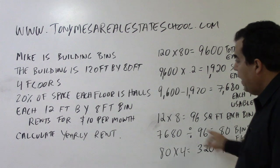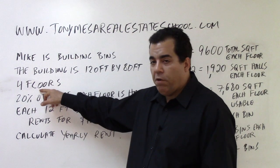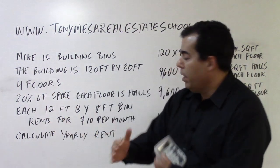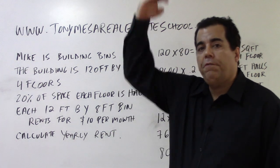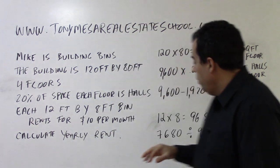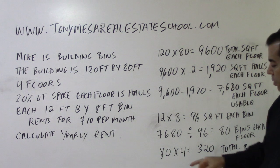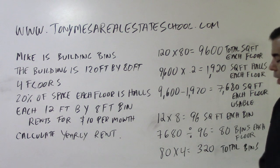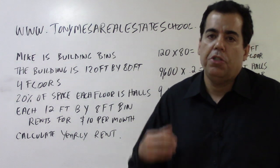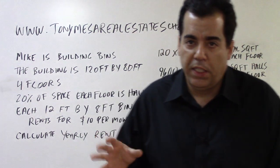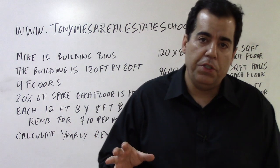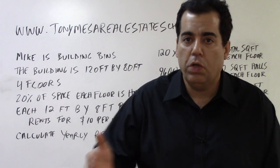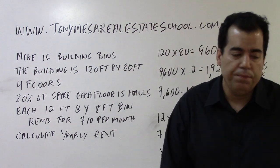You have 80 bins on each floor. Now we go back to the four floors. Each floor is 120 by 80, and you've got four floors. So you know you can build 80 bins on each floor; multiply that by four and you get 320 total bins. Based on the information given, you're going to be able to build 320 storage rooms, or bins as they're calling them.